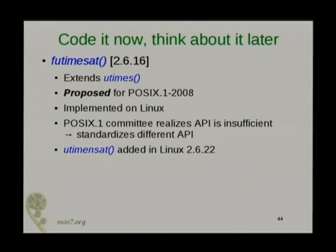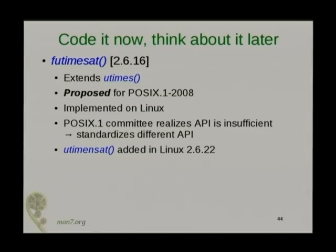Another example: there's a system call futimesat, which was added in 2.6.16 — it sets file timestamps. It was actually proposed for POSIX 2008 and implemented on Linux at the same time. But the POSIX committee realized this interface isn't sufficient, so they standardized a different one, utimensat, which was added in 2.6.22.